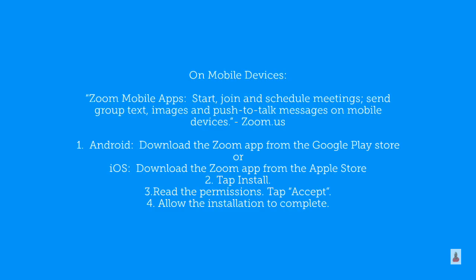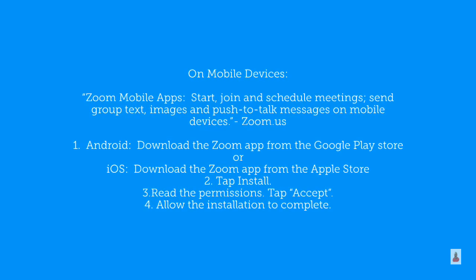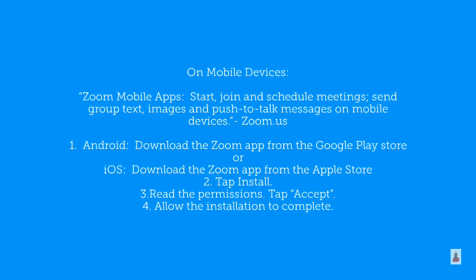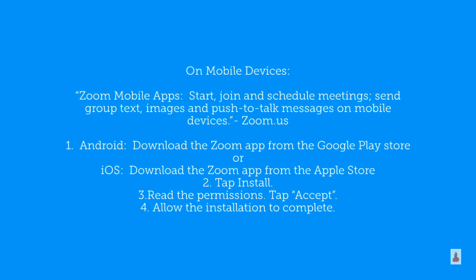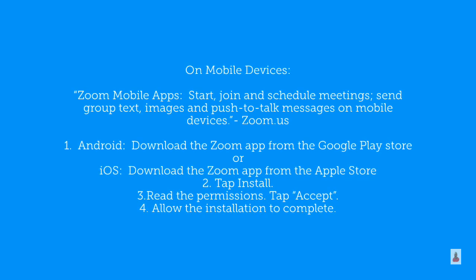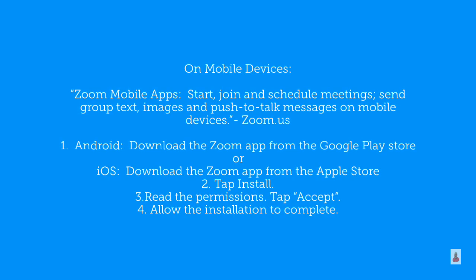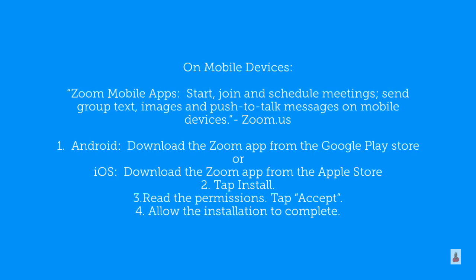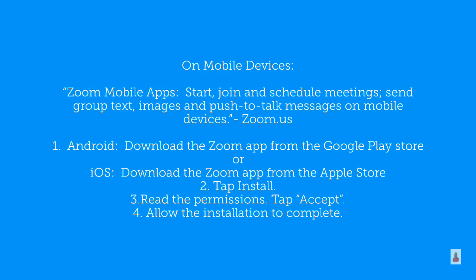On mobile devices, it says Zoom mobile apps. You can start, join, and schedule meetings, send group texts, images, and push-to-talk messages on mobile devices. On Android, you have to go to the Google Play Store. On iOS, you go to the Apple Store. Once you've found the app of your choice, tap install. Then read the permissions and tap accept. Then allow the installation to complete.